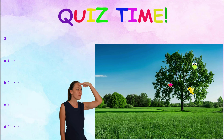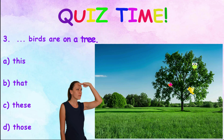Number 3: ___ birds are on a tree. A. This. B. That. C. These. D. Those.